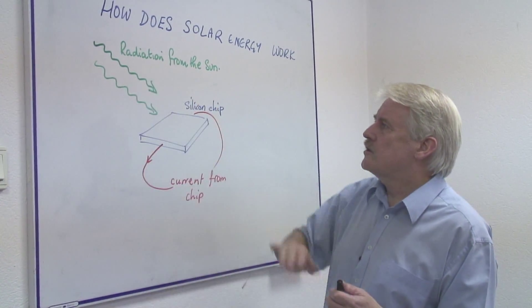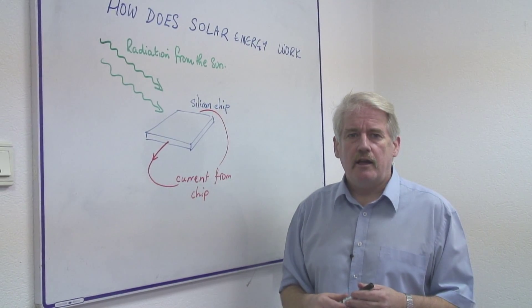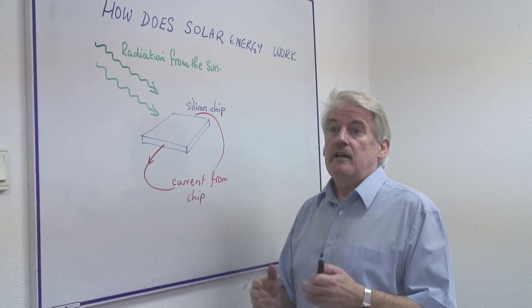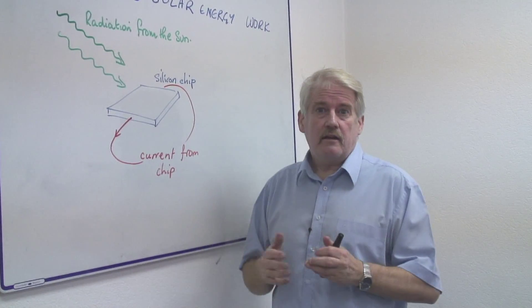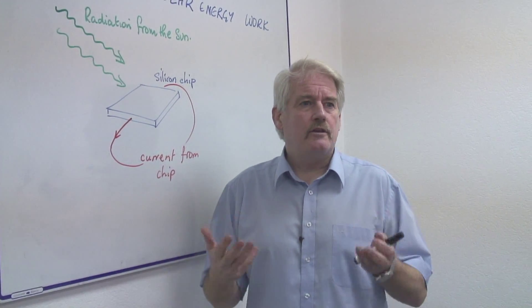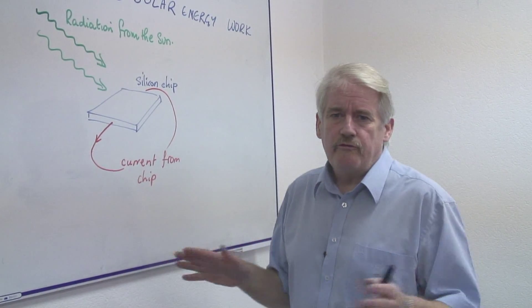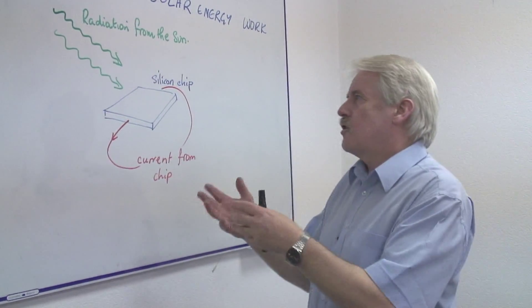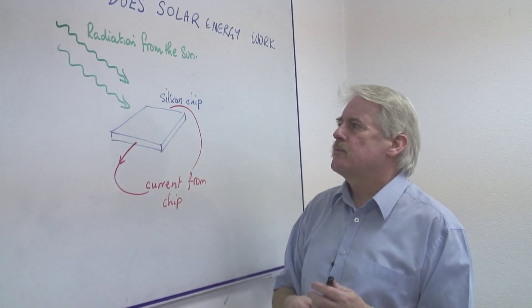So radiation from the sun which might be ultraviolet, it might be x-radiation, it might even be infrared radiation which is heat radiation or even radar like radio waves. So all kinds of radiation comes from the sun.